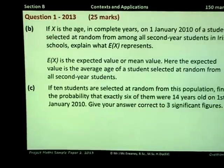Part C, if 10 students are selected at random from this population, find the probability that exactly 6 of them were 14 years on the 1st of January 2010. Give your answer correct to 3 significant figures. This is an example of a binomial distribution, where we're going to have 10 trials, and we want 6 successes. The probability of success in a single trial, here this would be the probability that a student is 14 years old. From our probability distribution table, that value was 0.575.